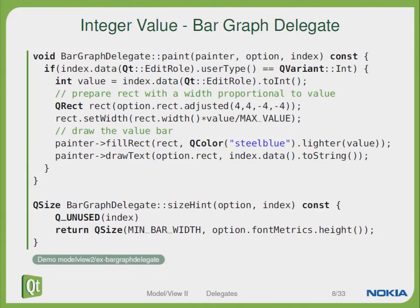Let's take a look at this integer value bar graph delegate and see how we have to overwrite the paint function so that we can see the progress in the cell. First we check if the data is of type integer, then we convert the data to an integer value and fill a rectangle based on this percentage value within our paint region. In addition to that we draw the text and then tell the view about the size of the cells.